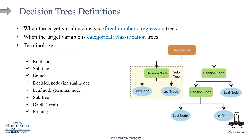When the target variable consists of real numbers — like wage, consumption, stock price, or stock market returns — that's decision tree regression. When the target variable is categorical — for example, default/no default, pass/fail, accepting/rejecting a loan, or buy/sell/hold in the stock market — that's decision tree classification.